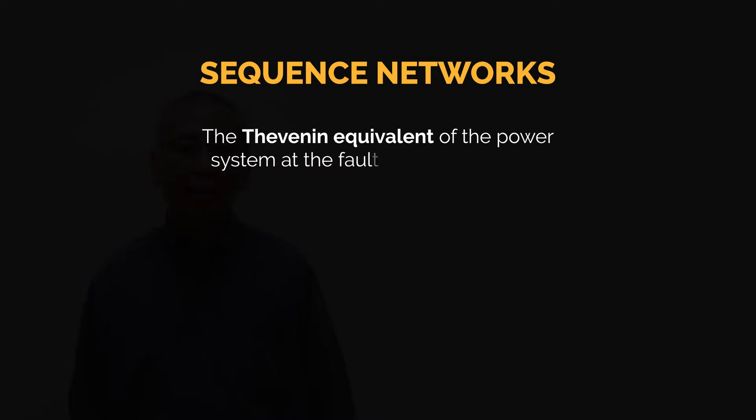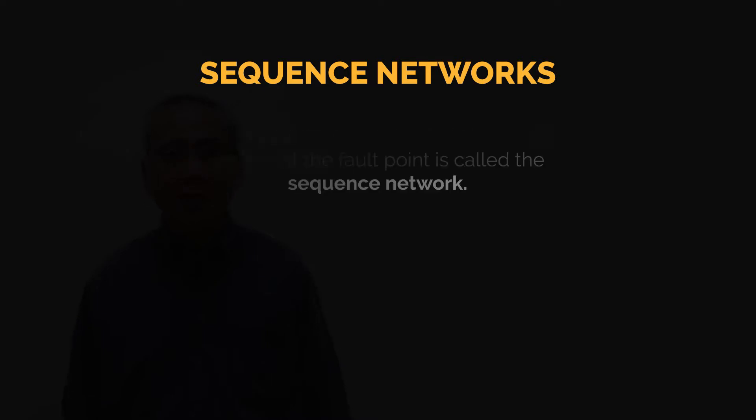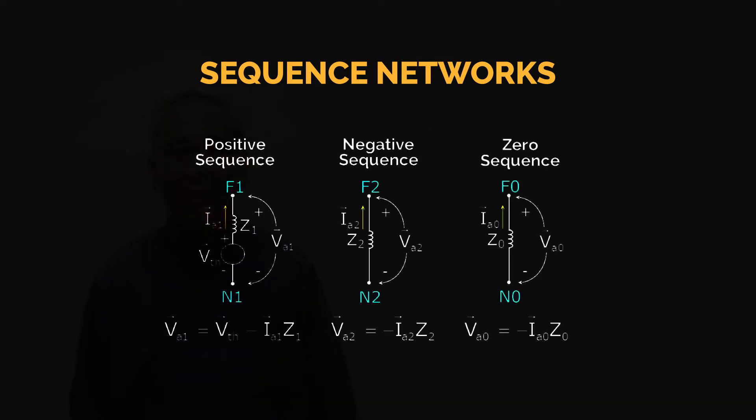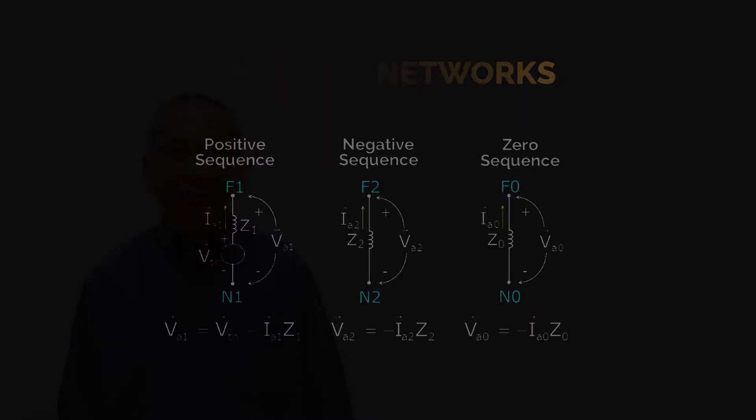The sequence networks, as mentioned in our previous modules, the system can be represented by an equivalent Thevenin representing its equivalent circuit from the faulted point to the neutral or to the reference bus. In this diagram, this illustrates the positive sequence, the negative sequence, and the zero sequence networks which have been discussed in the previous modules.